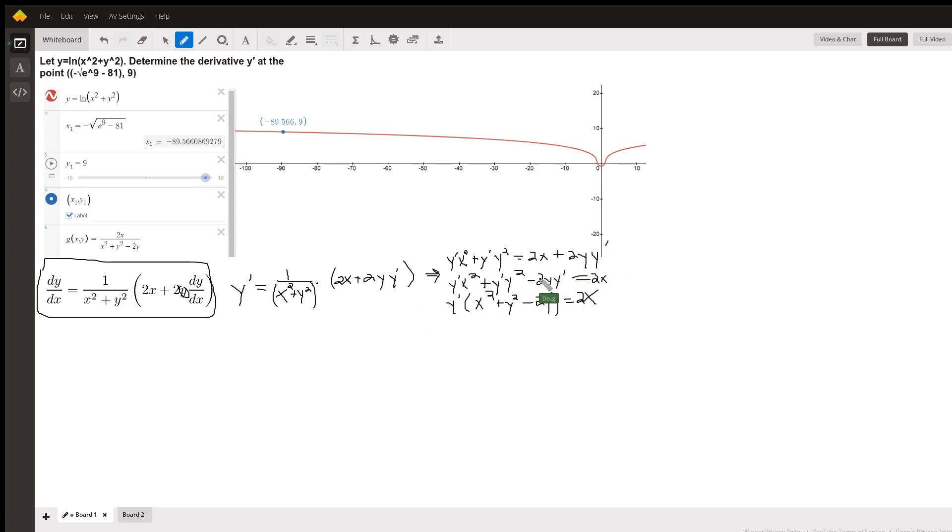Now I want to collect the terms containing y prime on the same side of the equal sign. So I'll subtract 2y y prime from both sides. Factor out the y prime from each of those terms. I'm getting y prime times the quantity x squared plus y squared minus 2y equals 2x.